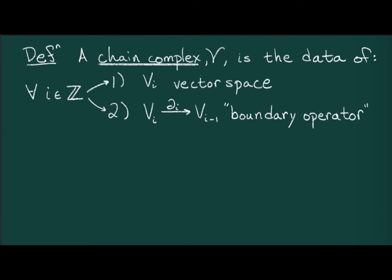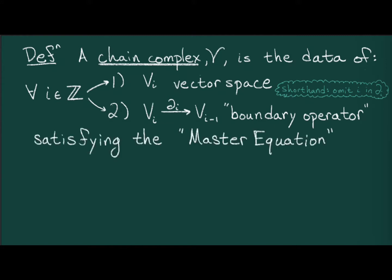And as a shorthand, I might omit the i. These maps have to satisfy a master equation, namely, the boundary operator must square to zero.